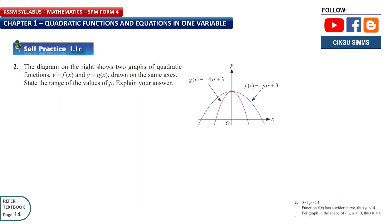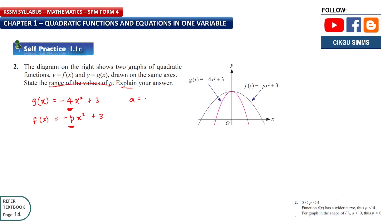Now question 2. The diagram shows two graphs of quadratic functions, f(x) and g(x), drawn on the same axis. We need to state the range of values of b and explain the answer. Comparing the two functions: g(x) = -4x² + 3, and f(x) = -bx² + c. The only difference between them is the value of a — for g(x) it is -4, and for f(x) it is -b.